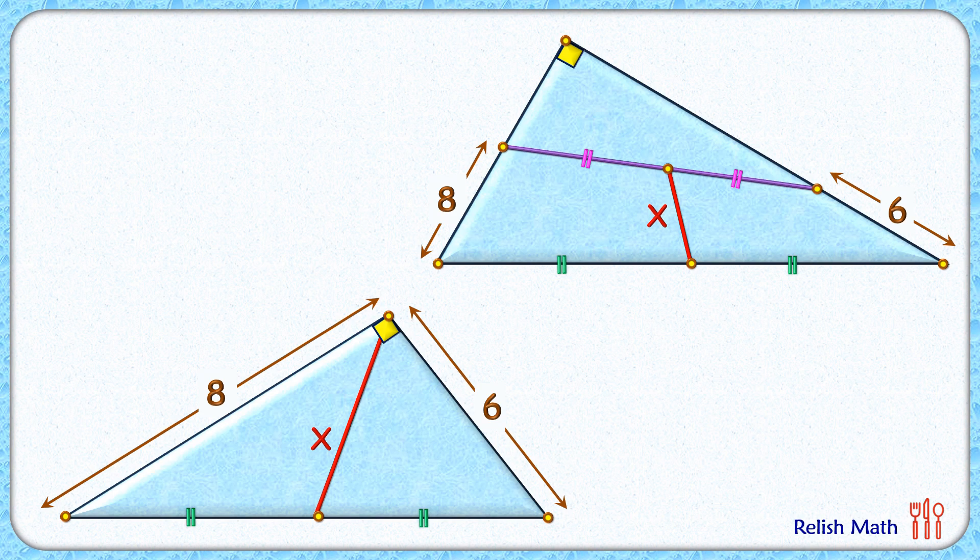And if we do angle chasing here, we'll find these two triangles are isosceles triangles, and x is half of the hypotenuse, or x is 5 centimeter, and that's our answer.